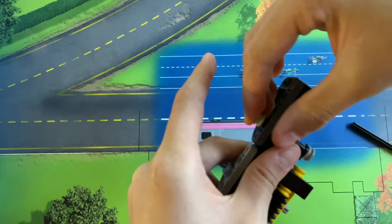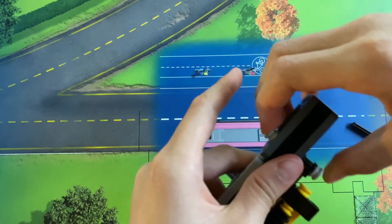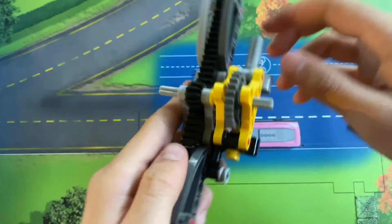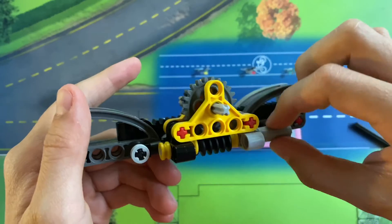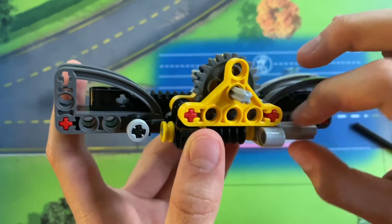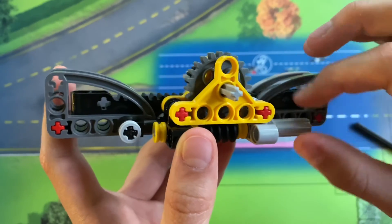Now, essentially what you have is a worm gear driven linear actuator. And as we talked about, worm gears are extremely powerful. So, so is this linear actuator. As you can see, it moves very slow. With the motor, this will be faster, but with the hand, it's pretty slow.